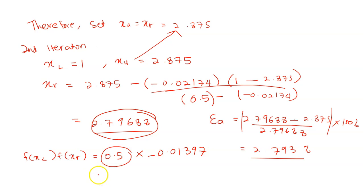So this is negative 0.00698. So this is obviously less than 0. And therefore you may set your new x_u equals to the previously calculated x_r which is 2.79688.